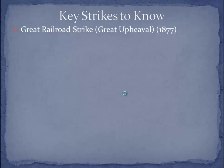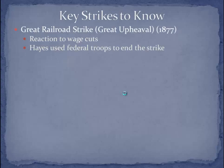There are about four strikes you need to be familiar with. The first is the Great Railroad Strike, also known as the Great Upheaval of 1877. A group of railroad workers went on strike because their wages were cut, and newly elected President Hayes sent in federal troops to end the strike — siding against the workers. This will be a theme: presidents tend to side against workers.